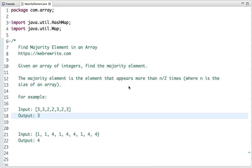In this tutorial I am going to discuss another interview problem: find majority element in an array. The problem statement is, given an array of integers, find the majority element. What is a majority element? The majority element is the element that appears more than n by 2 times, where n is the size of an array.